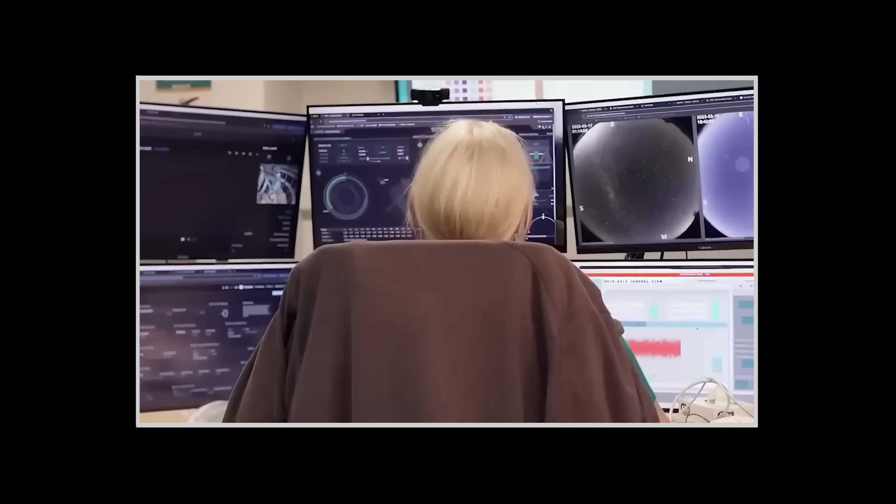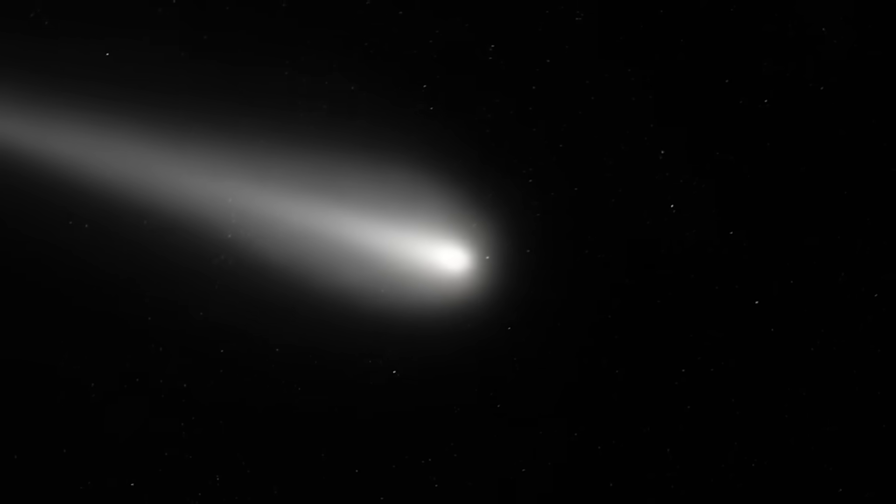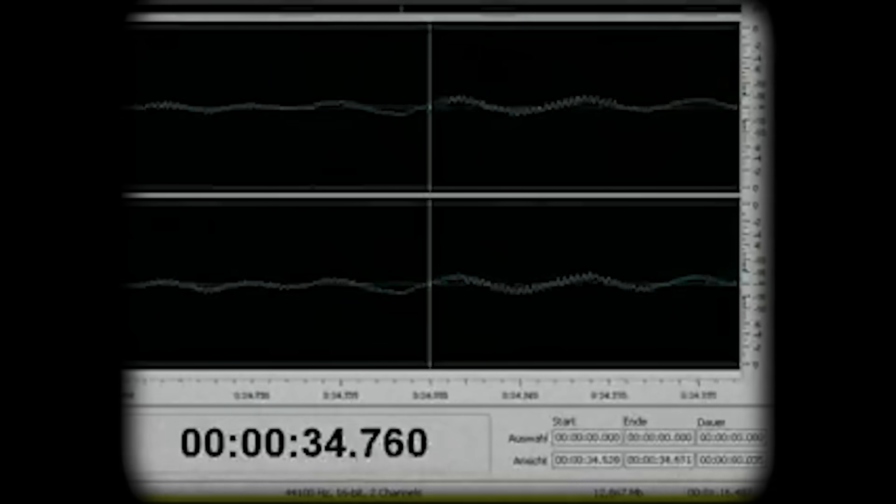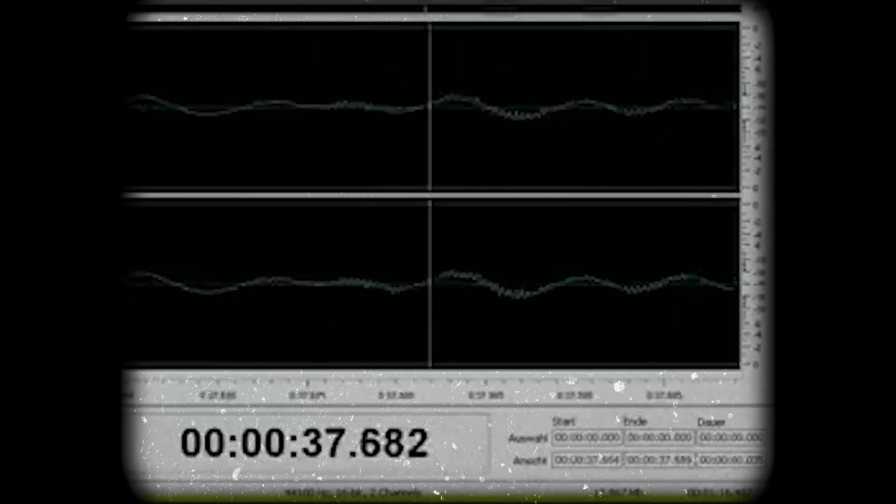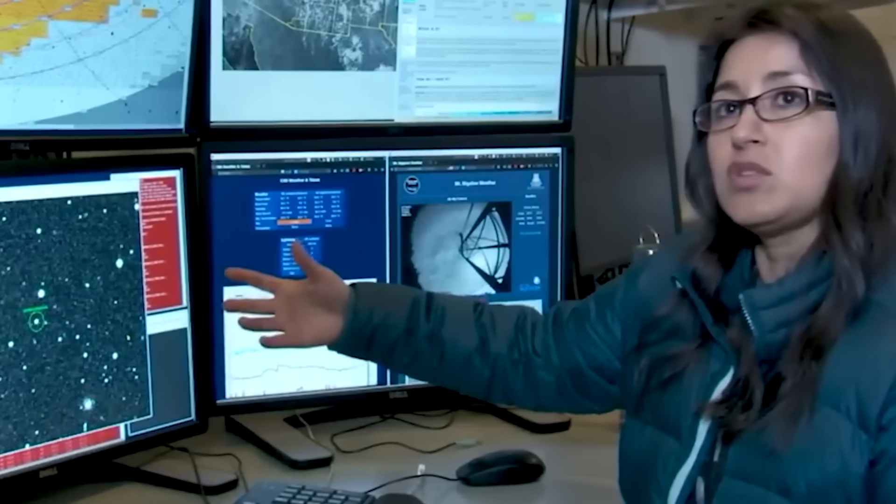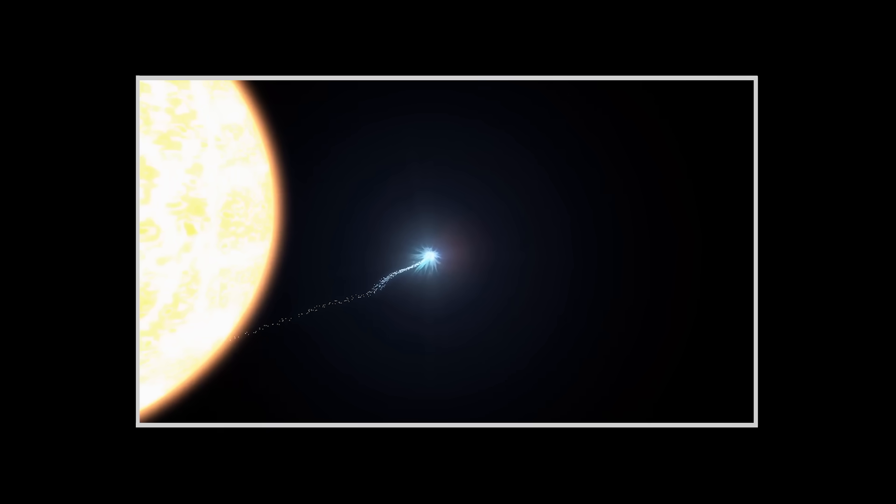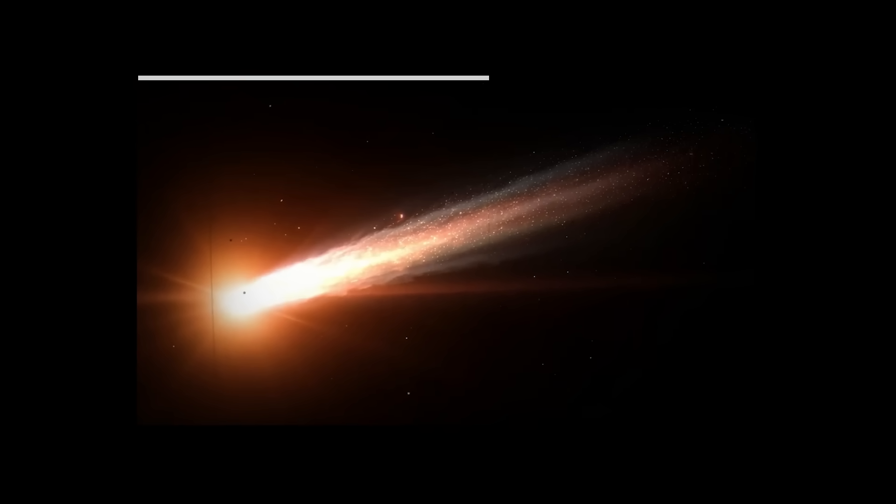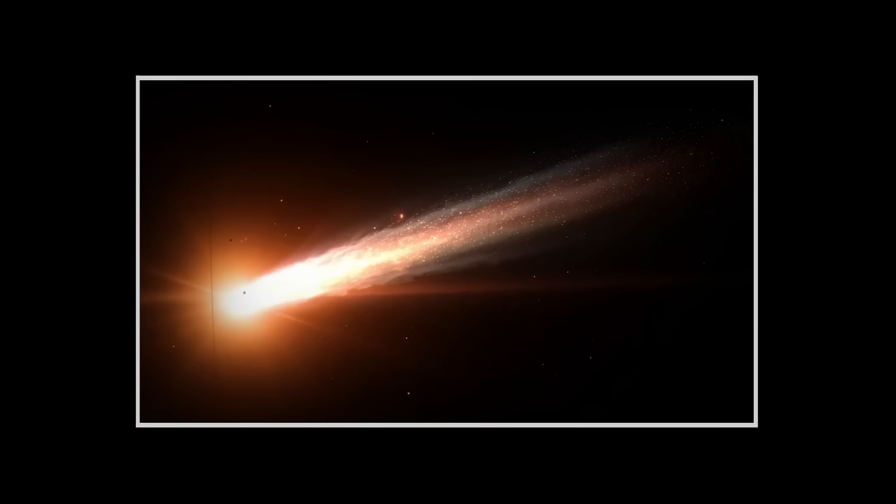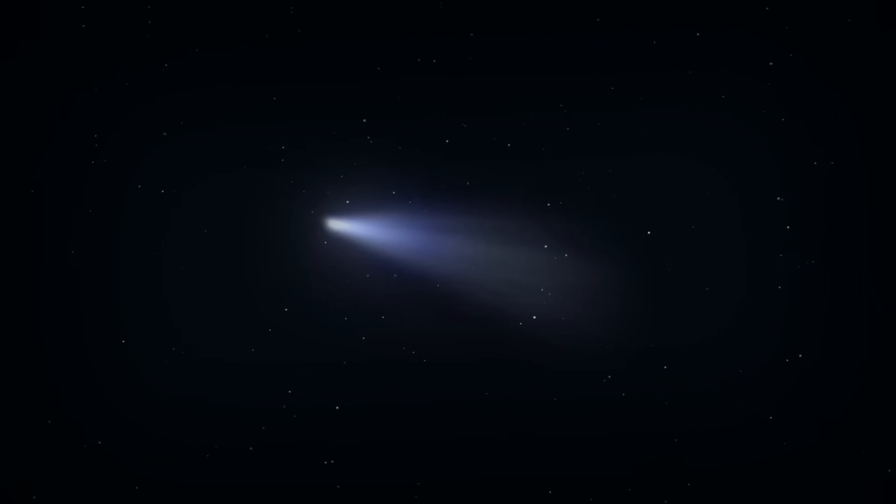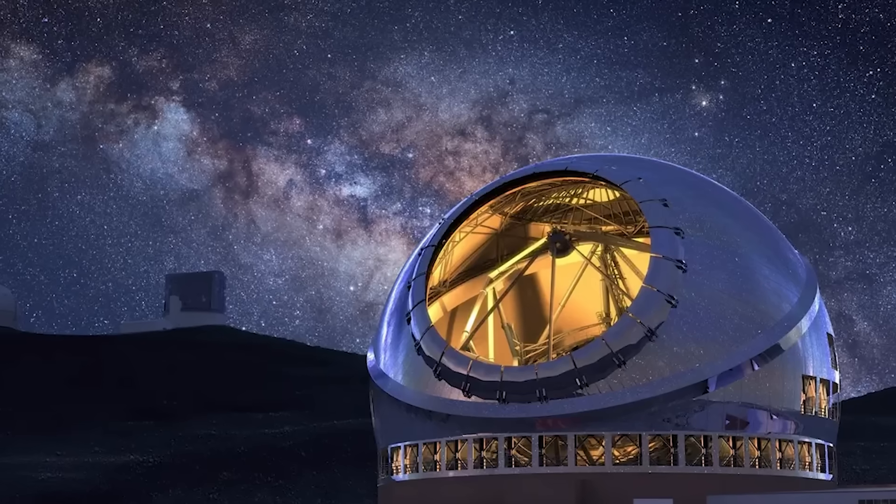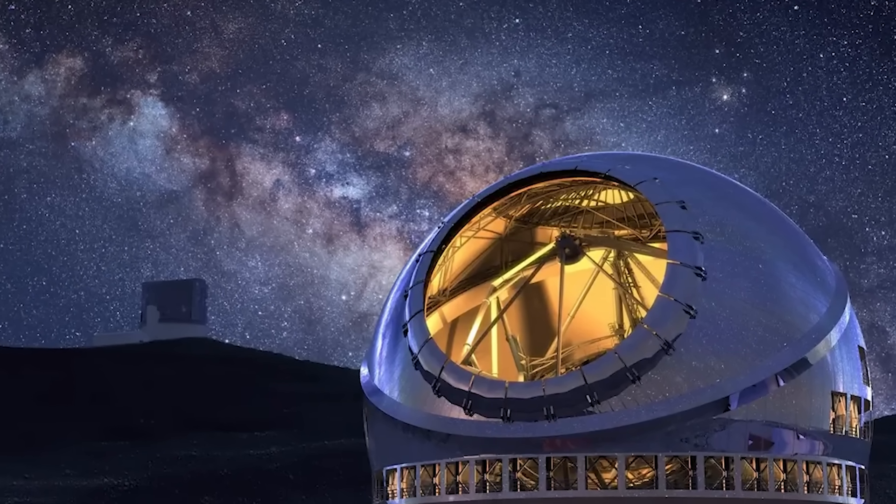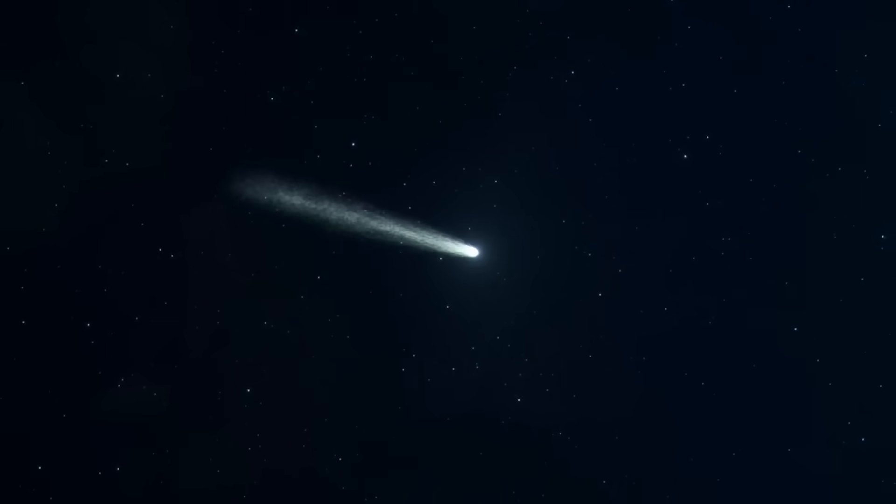Many people would say that's just a coincidence. Space is a big place after all. But the thing nobody tells you is that the odds of this happening are astronomical. The WOW signal came from a very specific, very small patch of sky. For an interstellar object to arrive from that same direction is like throwing a dart from across the country and hitting the bullseye on a board you can't even see. It's a statistical improbability of the highest order. And the weirdness doesn't stop there. As 3i Atlas gets closer to our sun, it starts to heat up and release gas like a typical comet. But the gas it's releasing is anything but typical. Scientists using the Very Large Telescope in Chile detected a massive spike in nickel and cyanide, but strangely, no iron.